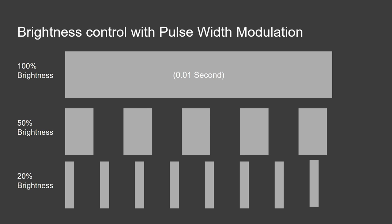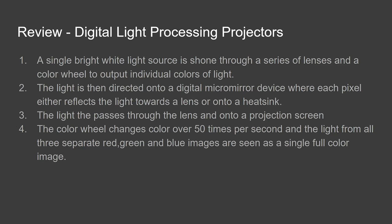Okay, so that's how digital light projectors work. Let's just do a quick review. So the process: a single bright white light source is shone through a series of lenses and a color wheel, which outputs individual colors of light.